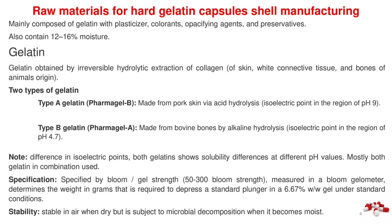The shell also contains 12–16% moisture. Gelatin is obtained by irreversible hydrolytic extraction of collagen of skin, white connective tissue, and bones of animal origin. Two types of gelatin: Type A (Pharmagyl B) made from pork skin via acid hydrolysis, isoelectric point in the region of pH 9. Type B (Pharmagyl A) made from bovine bones by alkaline hydrolysis, isoelectric point in the region of pH 4.7.